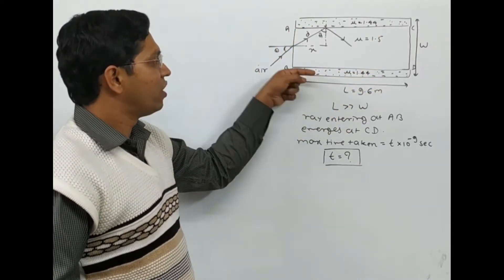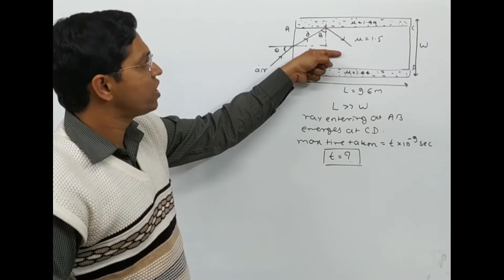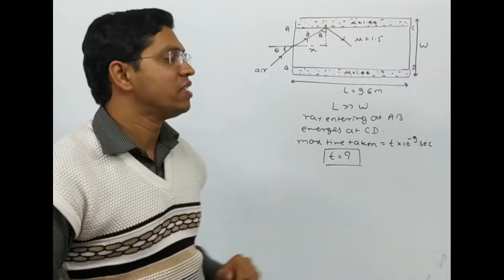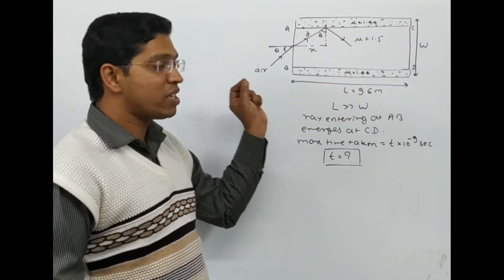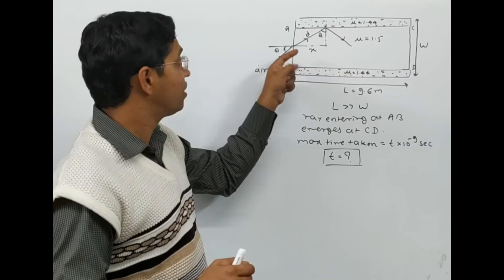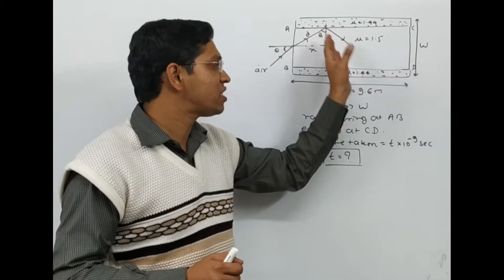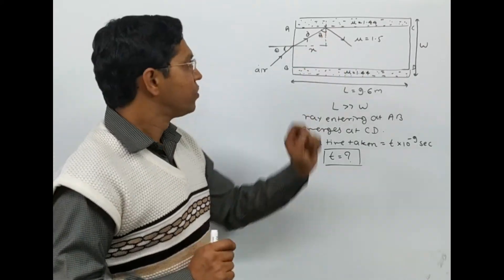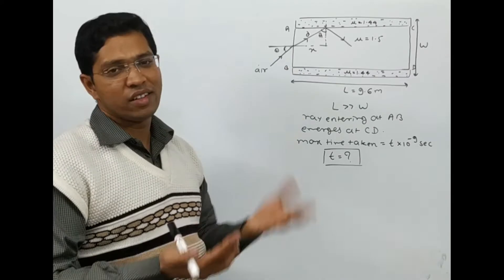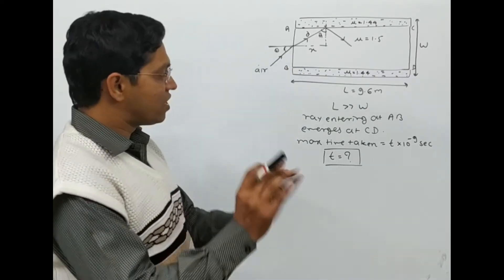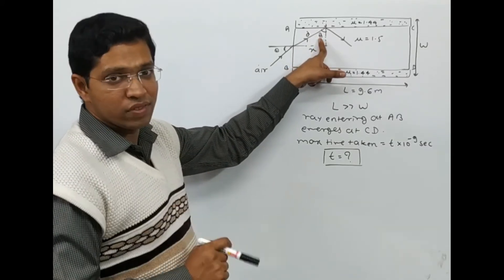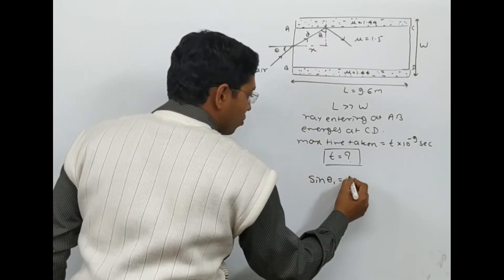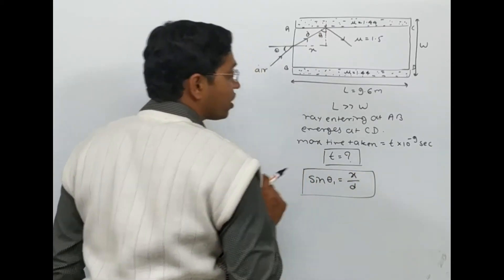In this question, the arrangement shows a medium with refractive index 1.44 on the outside and 1.5 inside. Light entering at surface AB leaves at surface CD. This implies total internal reflection is occurring at the intermediate surface. The light falls on the inner surface at angle theta1. From simple geometry, sine theta1 equals x divided by d, where x is the horizontal distance per reflection and d is the distance traveled inside.